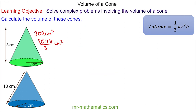Now let's move on to the blue cone. The radius is again 5cm, but here we have a slant length, which is not the perpendicular height. The perpendicular height is this length here, and we can model this as a right-angled triangle, where this is the right angle.